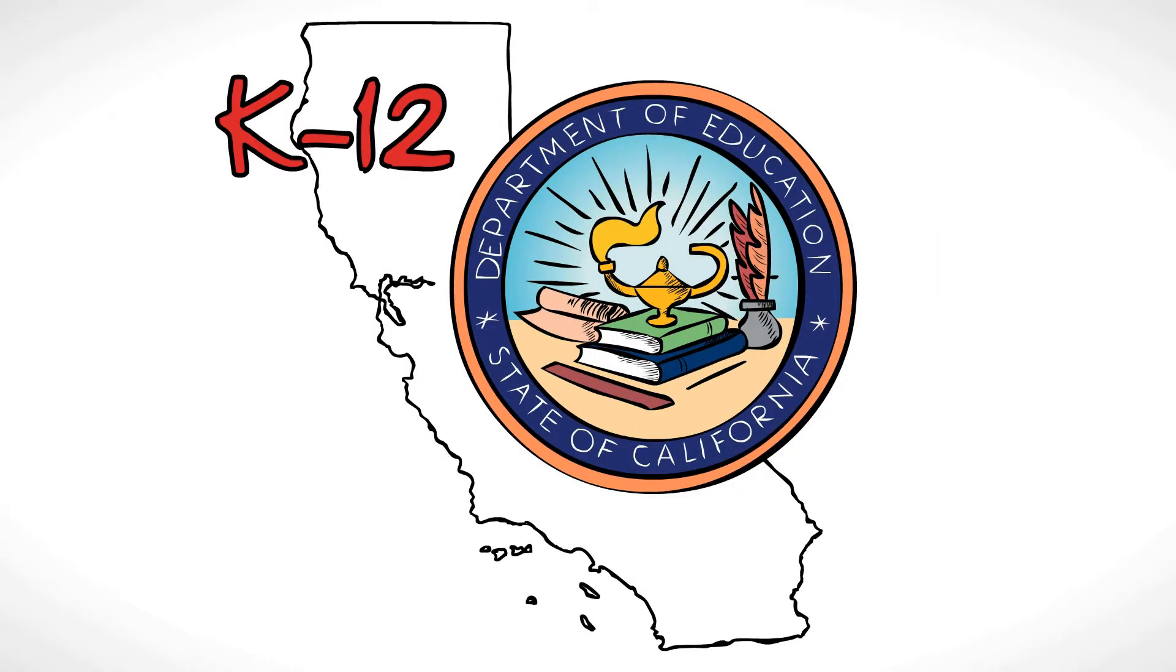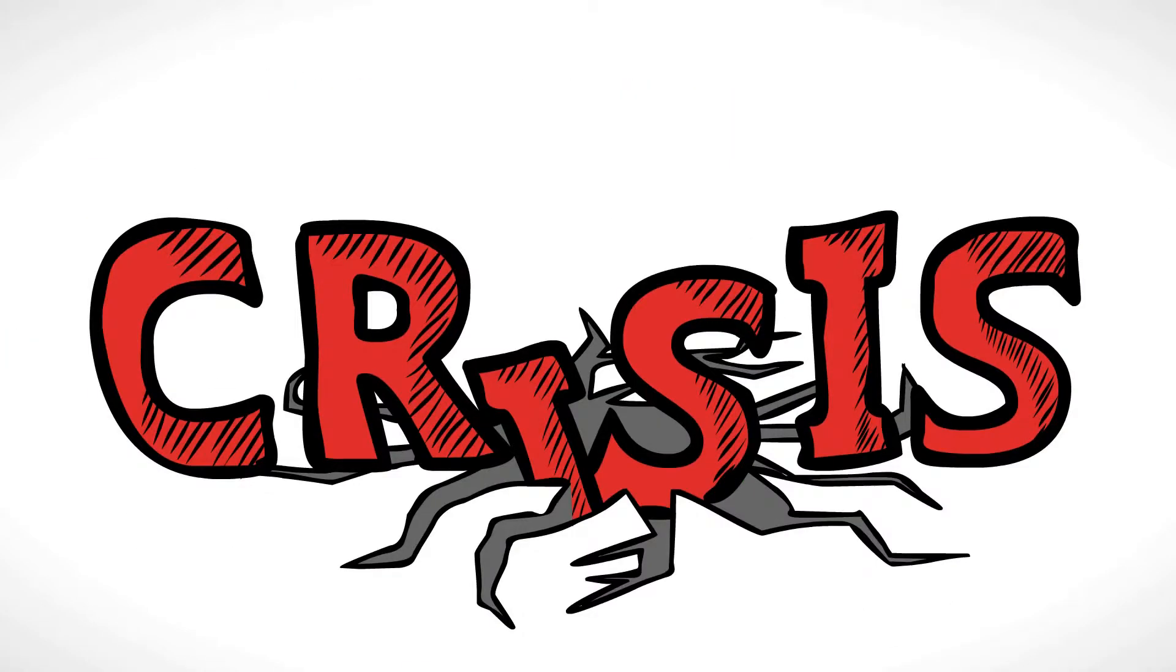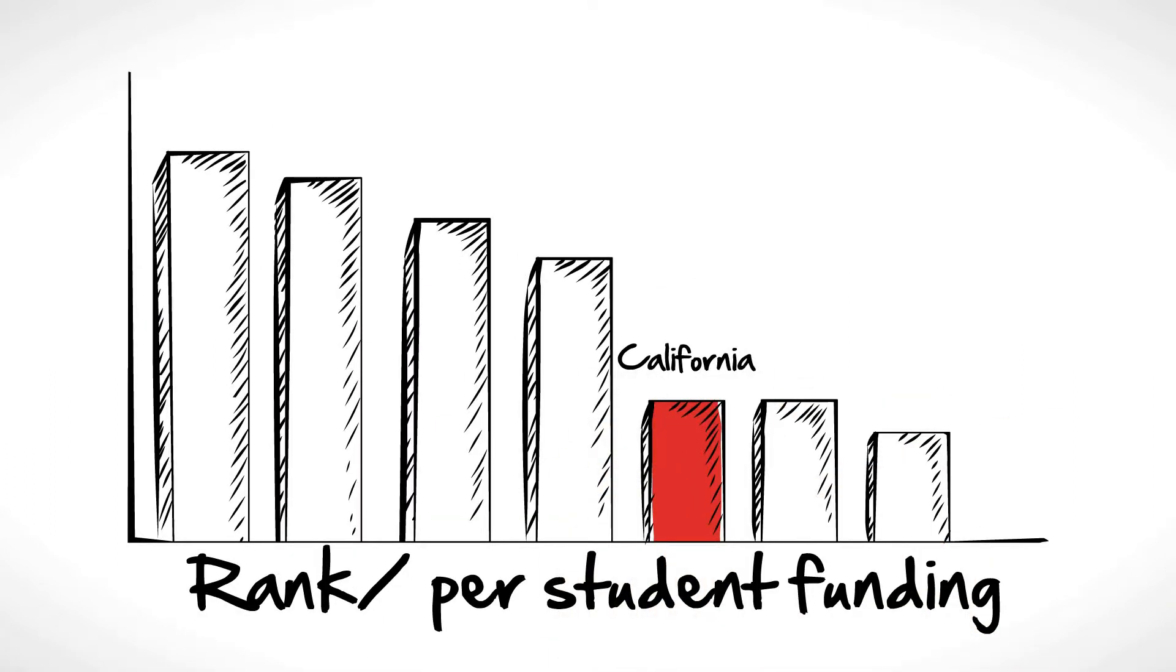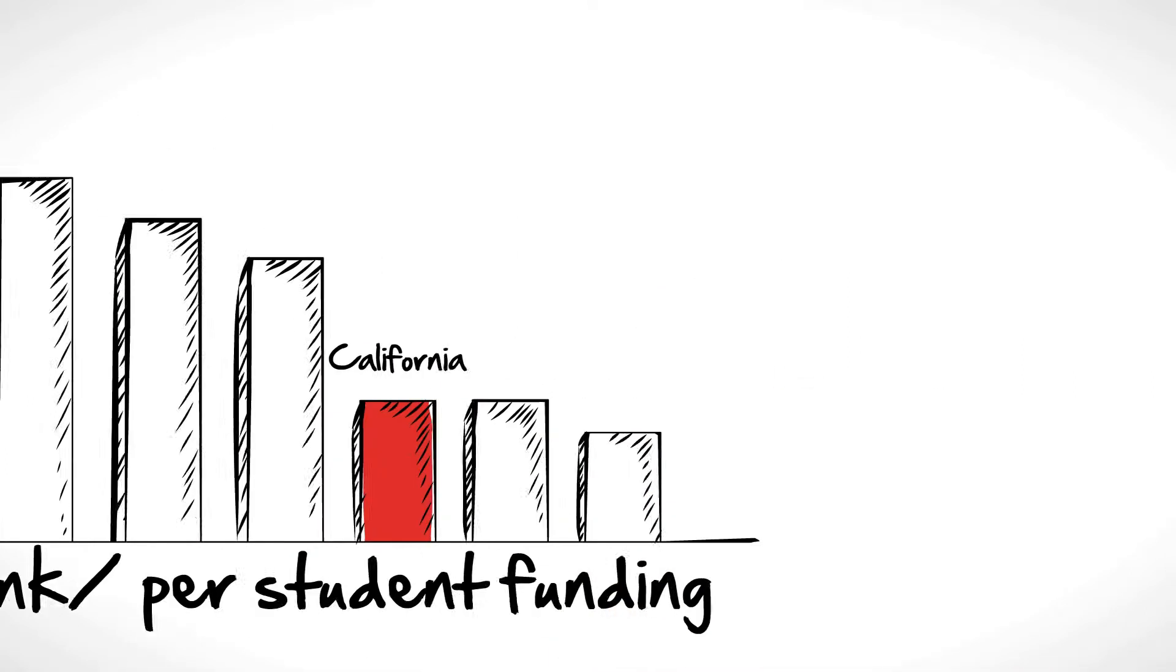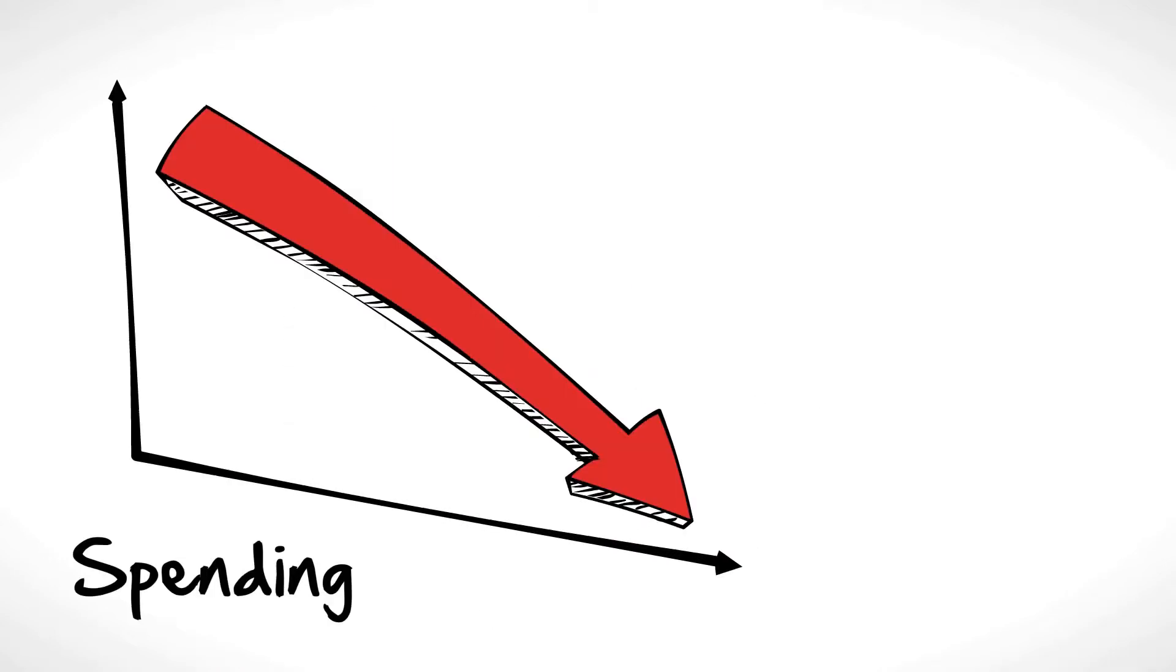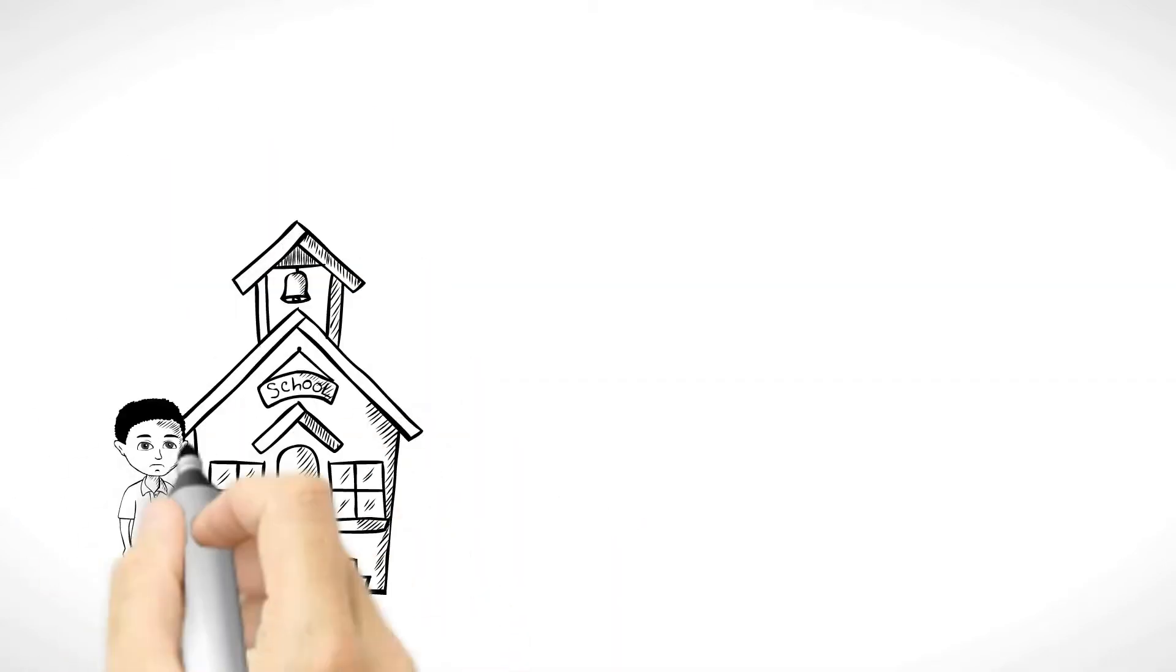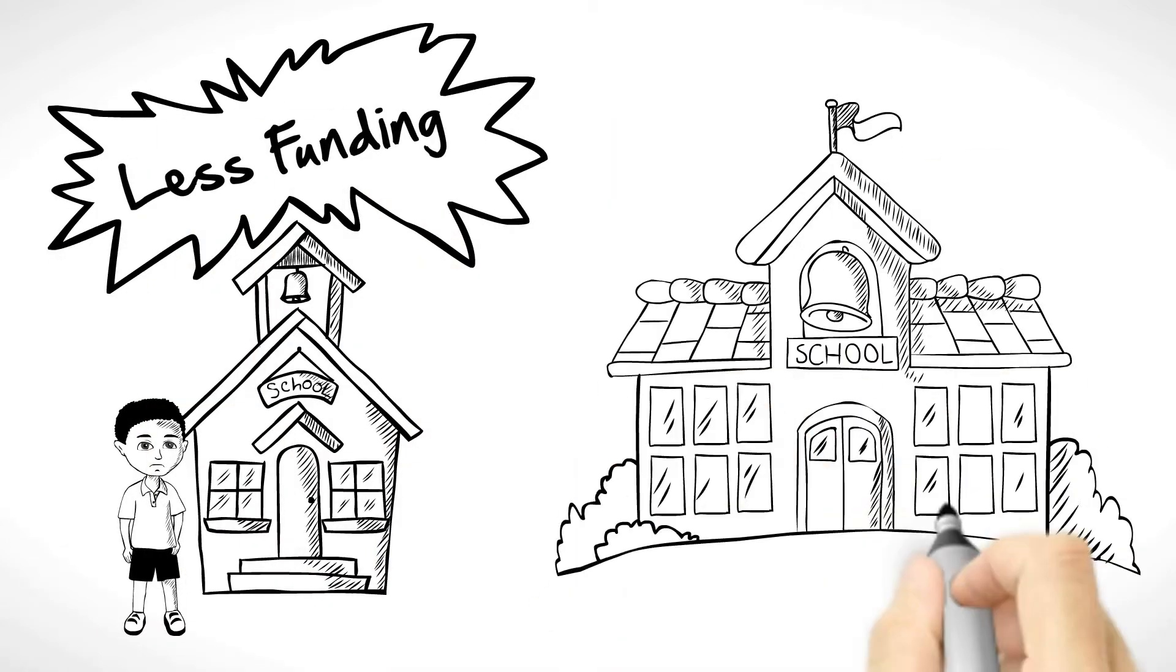K-12 education in California is in crisis. Not only does California rank near the bottom in per-student funding, and spending has been drastically cut, but students in low-income schools receive less funding than kids in well-to-do neighborhoods.